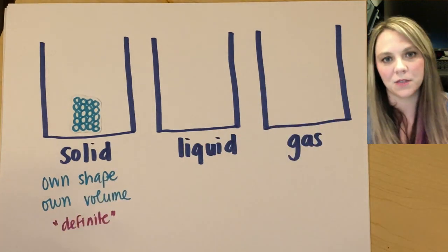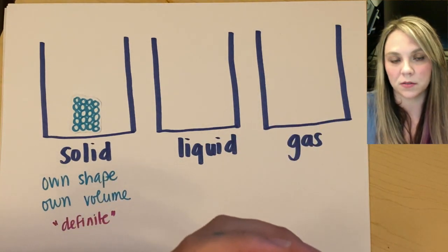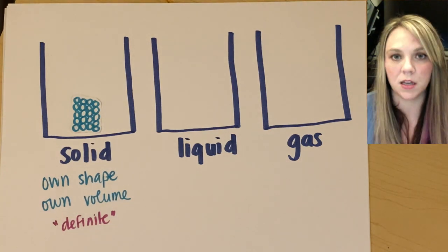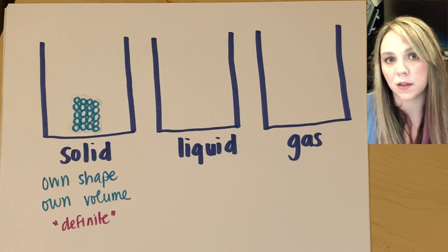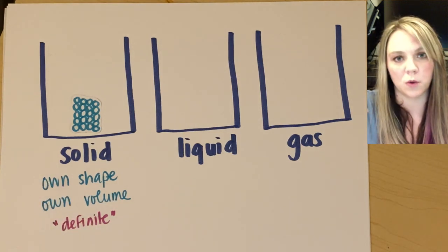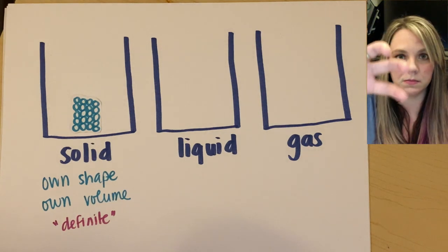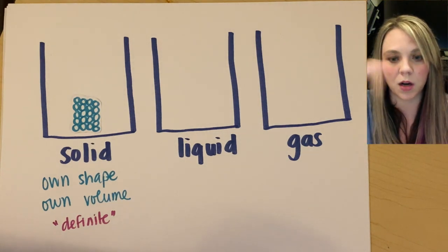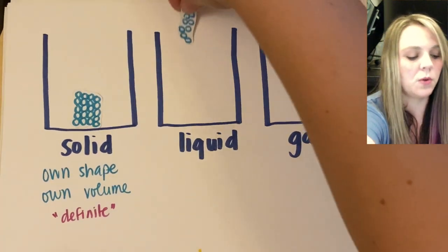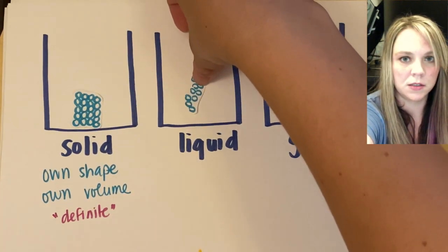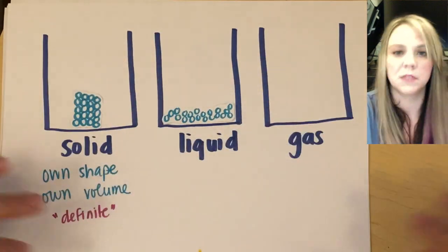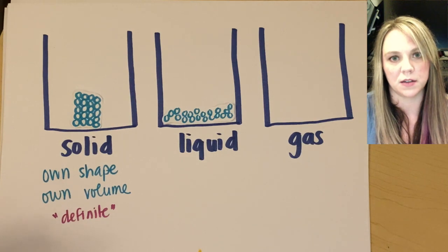A liquid. If you could imagine if you had a cup and you had like a water bottle and you took the water bottle and you started pouring the water into the cup, the amount of water that you have is not going to change, but the shape that the water takes will, right? The water in the water bottle is not going to look exactly like a water bottle when it's in your cup. So a liquid, if you pour a liquid into a container,